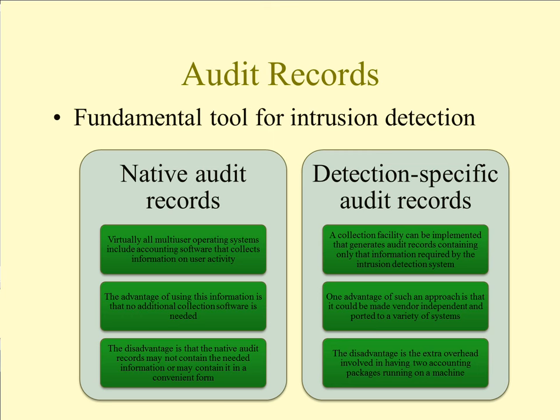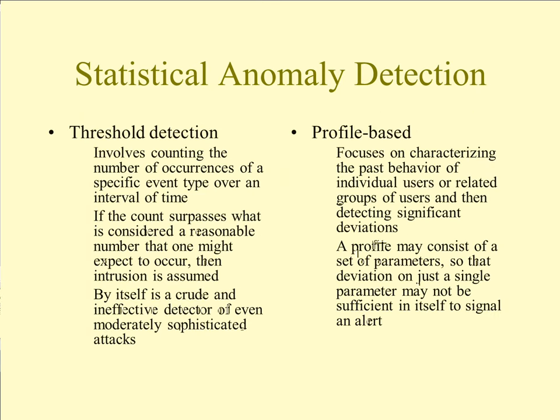The disadvantage of native audit records is that they may not contain the needed information or may not contain it in a convenient form, so you might need to reformat the data. Detection-specific audit records, on the other hand, generate audit records containing only the information required by the intrusion detection system. The advantage is that they can be made vendor-independent and ported to a variety of systems. However, there is extra overhead in having two accounting packages running on a single machine.